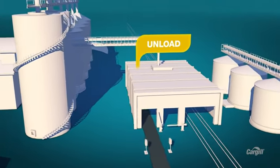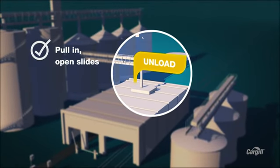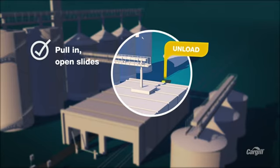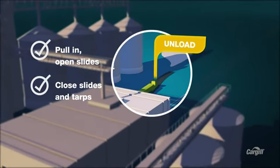Pull into the pit, open all hopper slides completely, and unload your grain. Once you've completed unloading, exit the building and then take a moment to make sure all tarps and slides are closed.